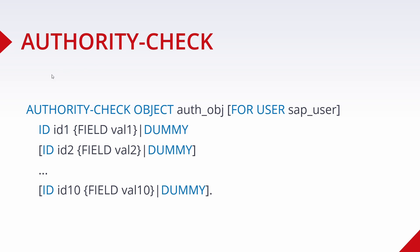Here we can see the syntax for the authority check statement. We will see an example in a couple of seconds, but here is the general syntax. First of all you have to use the statement AUTHORITY-CHECK. Then you have to use the keyword OBJECT, and after OBJECT you specify as a literal — so as a string — the authorization object. Within transaction code SU21 you can also analyze and look more closely at the authorization object, but within here you have to specify it.